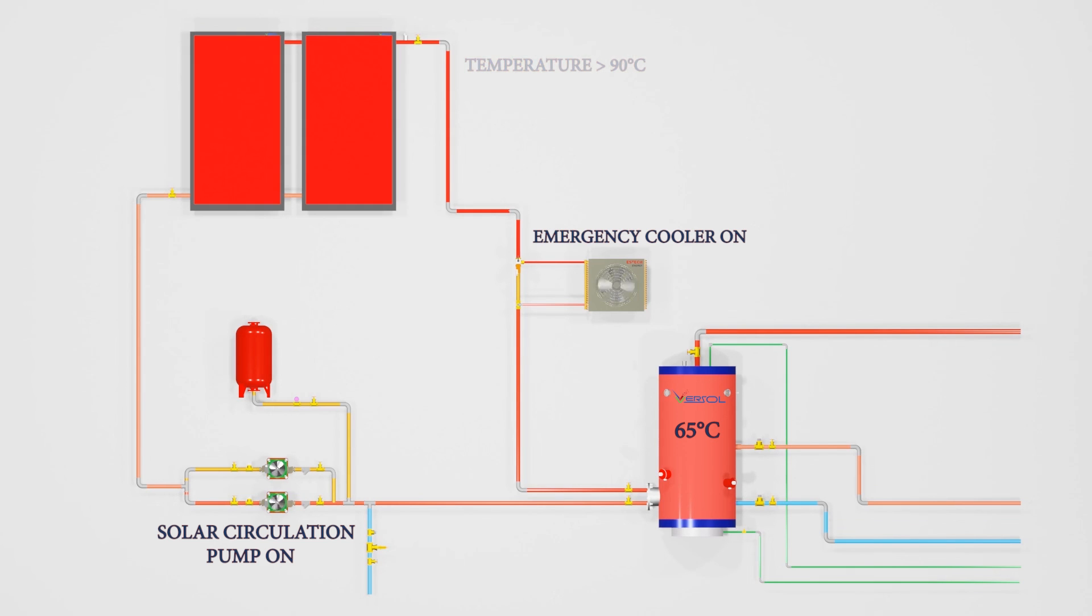When the solar side temperature goes below 75 degrees Celsius, three-way valve will be closed and air cooler will be turned off.